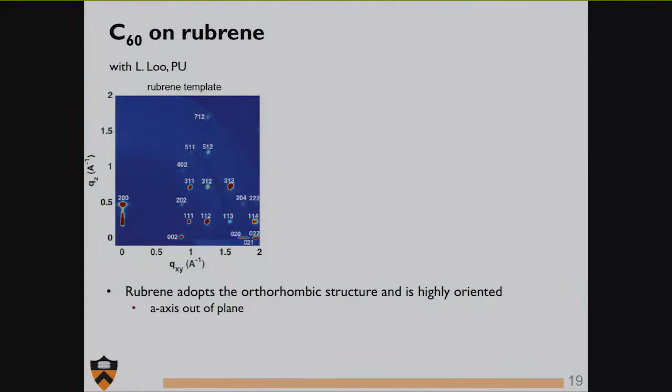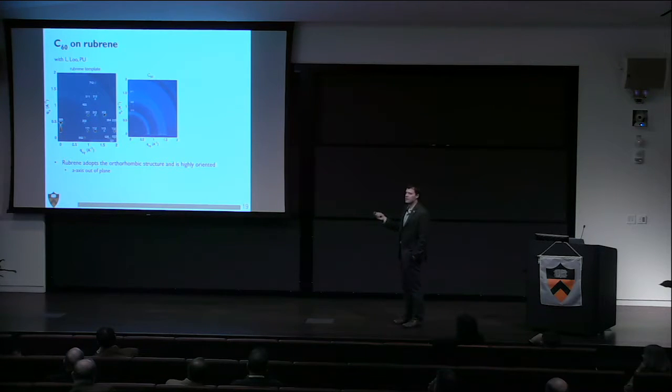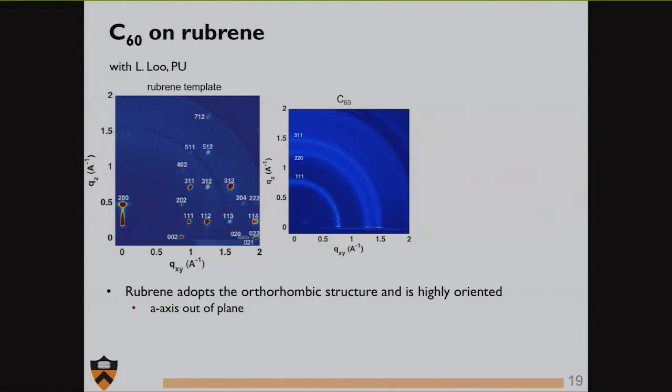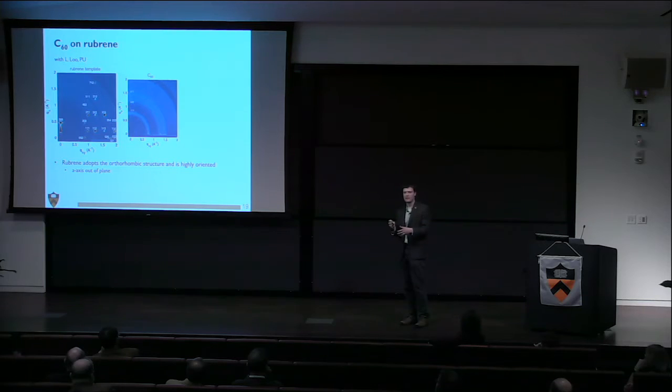The other intriguing part, and this is work with Lin Lu in chemical engineering, is these templates of rubrene have a very specific orientation. This is the x-ray scattering, the diffraction pattern of x-rays hitting this sample, and we see very specific points in this diffraction pattern. That means rubrene is oriented in a very specific way. When we deposit C60 on a typical non-interacting substrate like glass, we get a diffraction pattern that looks like this, a series of concentric rings. Those rings mean we have these crystallites, they're very small, and they have no particular orientation. They're random in x, y and z planes.